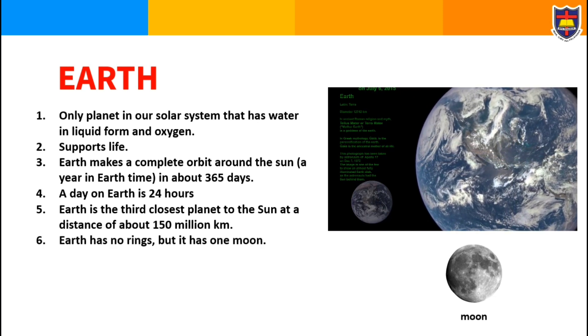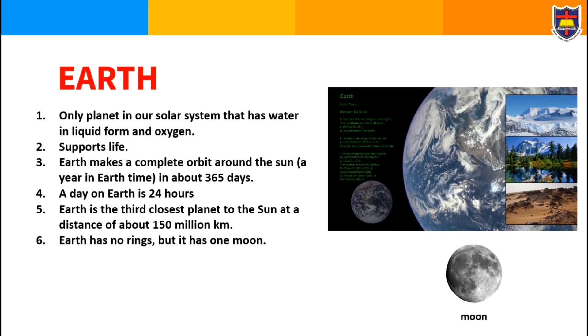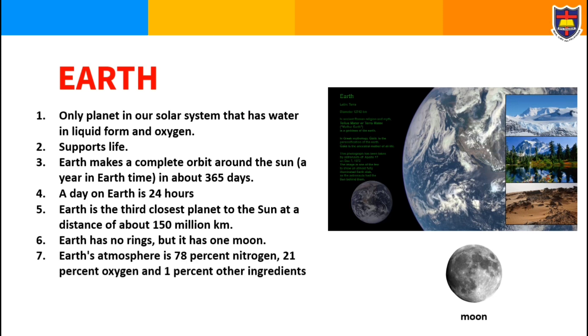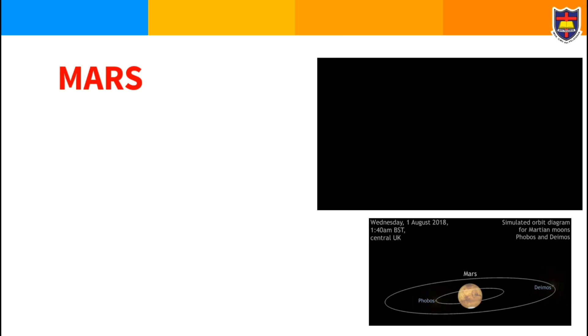Earth has no rings but it has one moon. The moon orbits the Earth like the Earth orbits the Sun. Earth's atmosphere is 78% nitrogen, 21% oxygen, and 1% other ingredients.